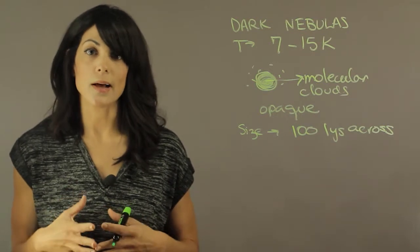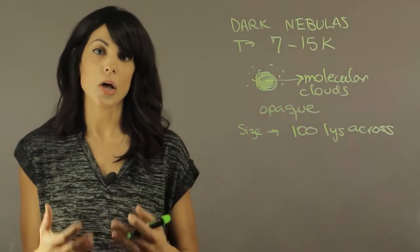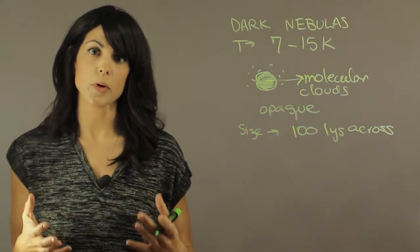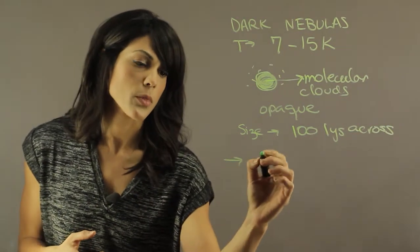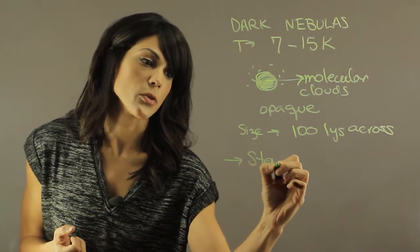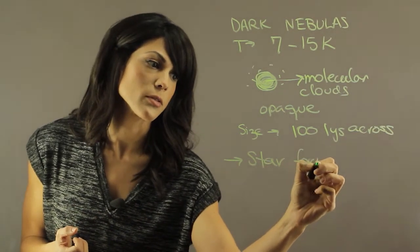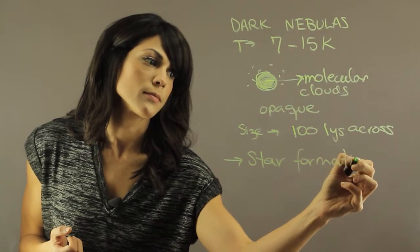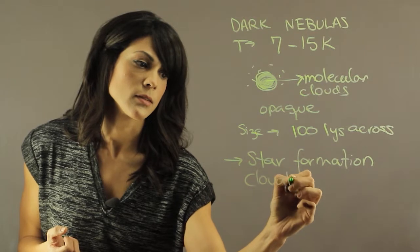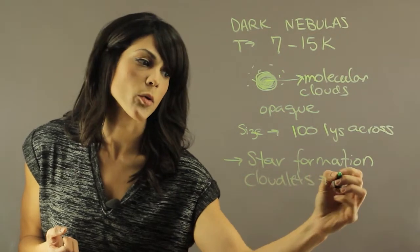So these cold clouds actually have a lot of cloudlets forming inside that are contracting and becoming protostars. The main thing that happens inside a cold nebula is that you have star formation, and you get that from cloudlets inside forming protostars.